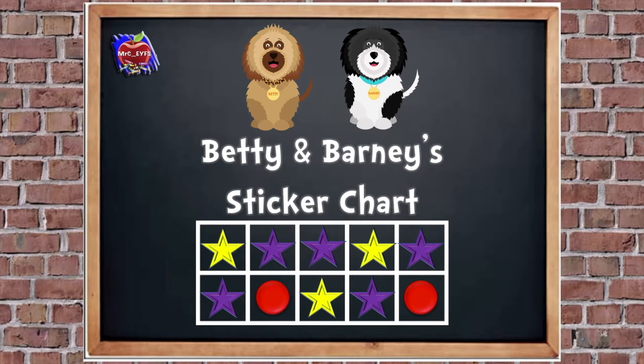So if we look carefully, which stickers are there more of? Are there more yellow stars? Are there more purple stars? Or are there more red circles? It's quite tricky because we have to count them and they're all muddled up, aren't they?